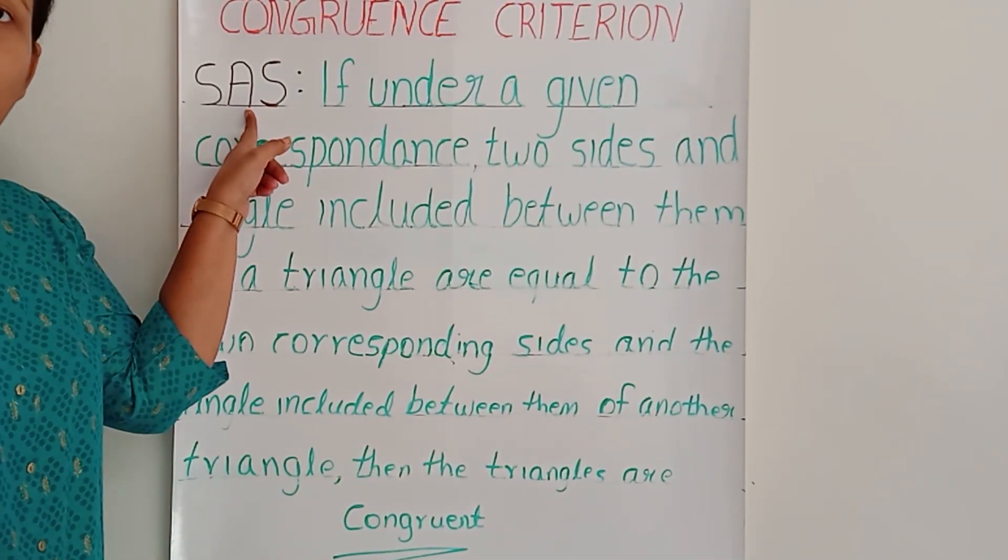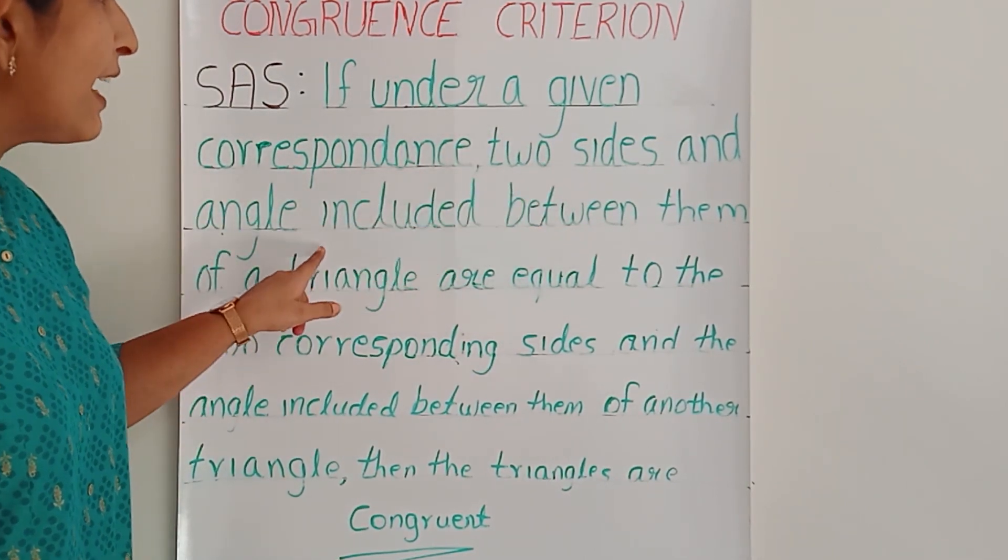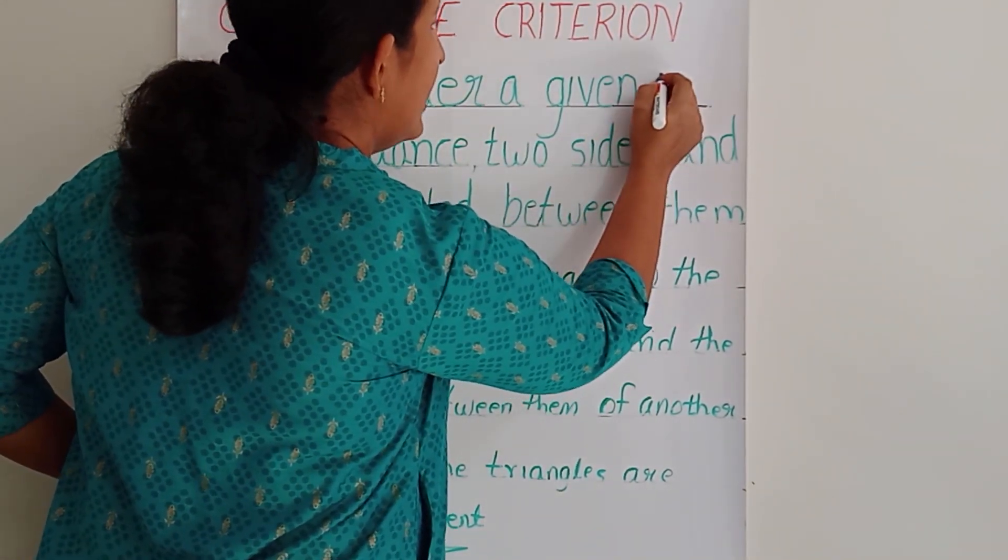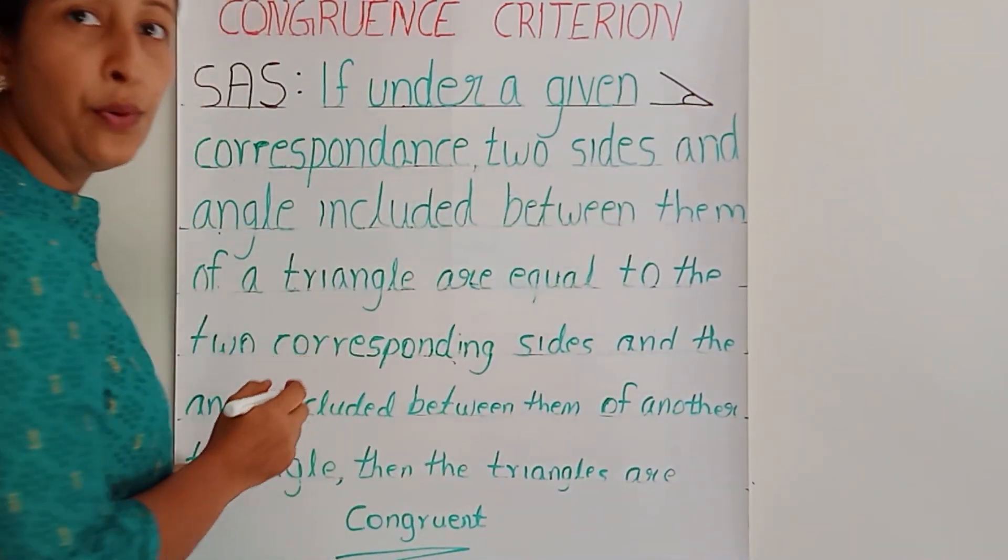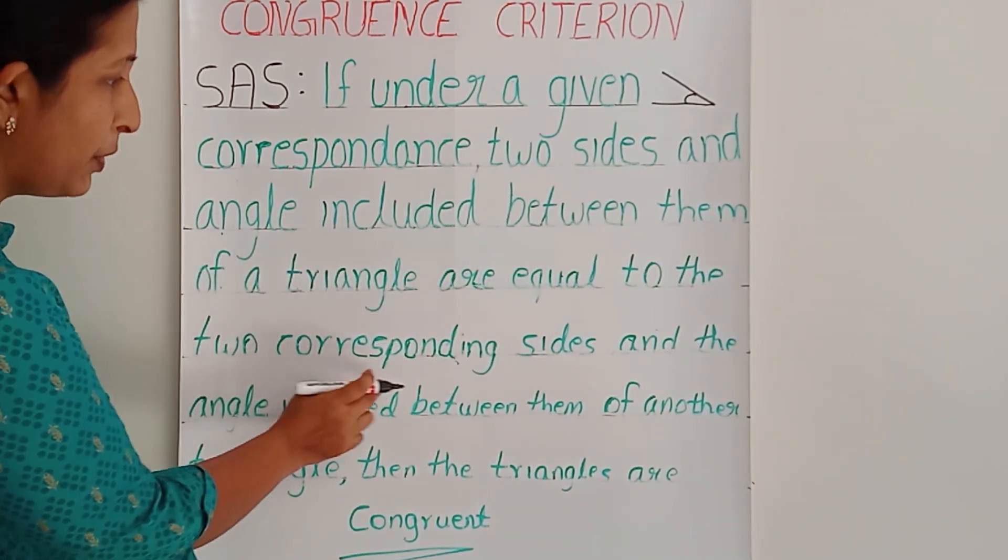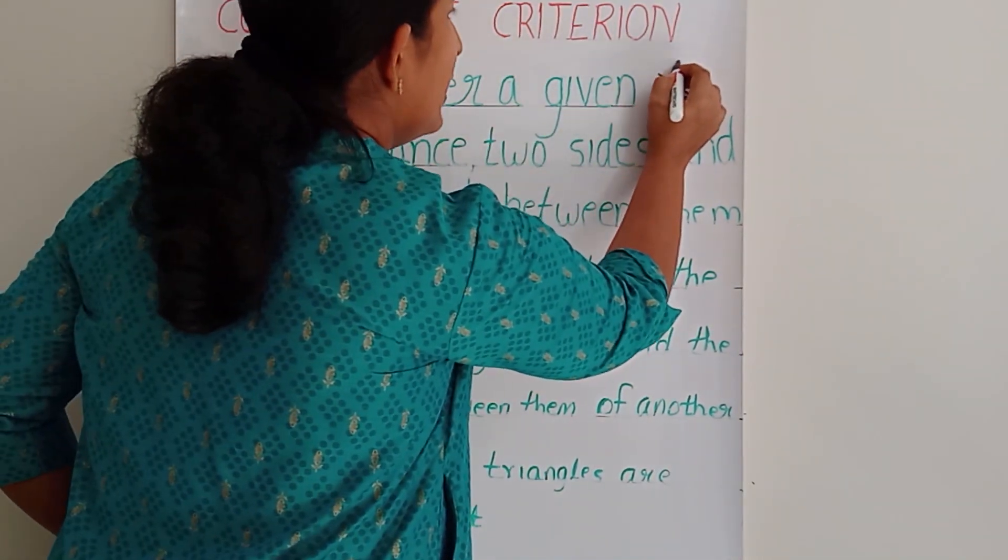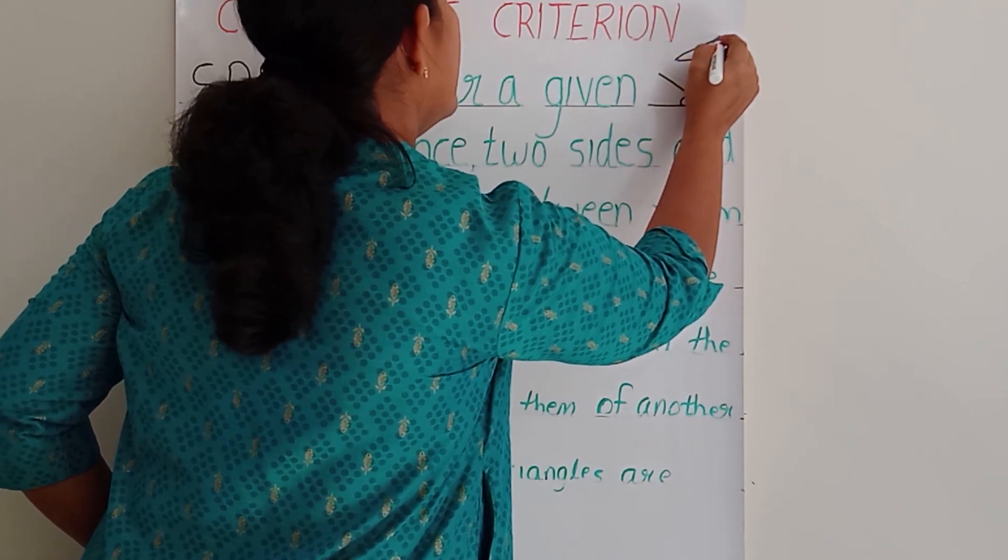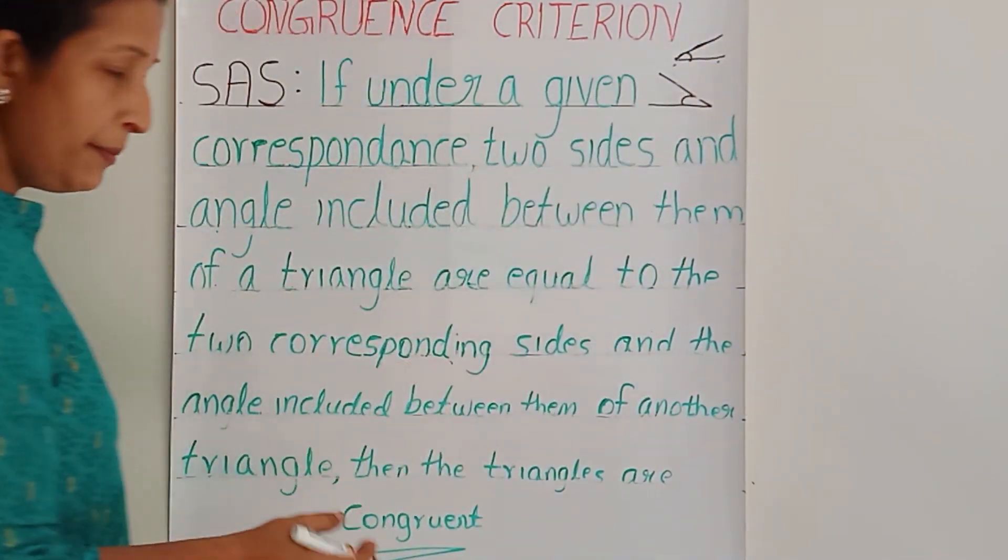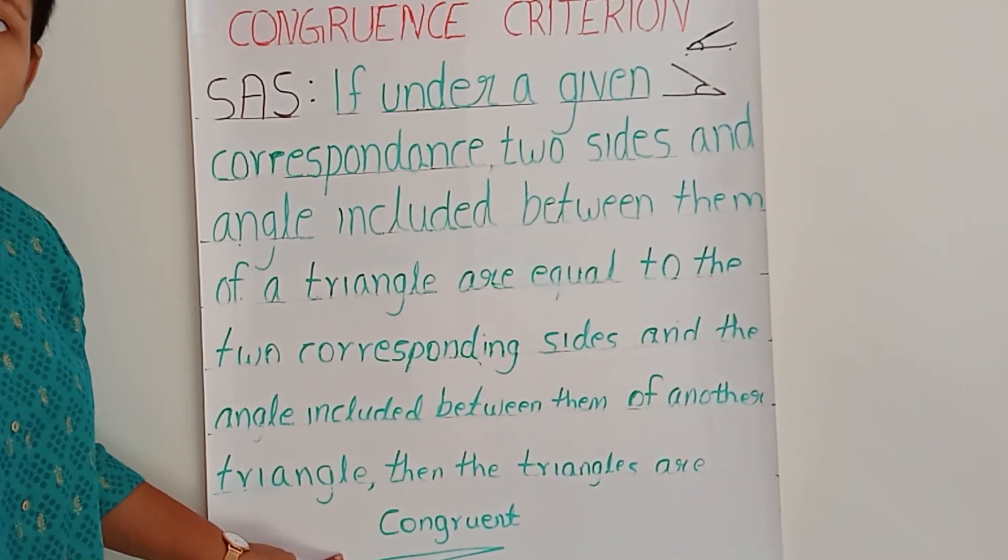SAS congruence criteria says that if under a given correspondence, two sides and angles included between them, we have seen the data here. One side, second side, and the angles included between them of a triangle are equal to the two corresponding sides. If you are getting two sides and the angles included between them of another triangle, then we can say that these two triangles are congruent.